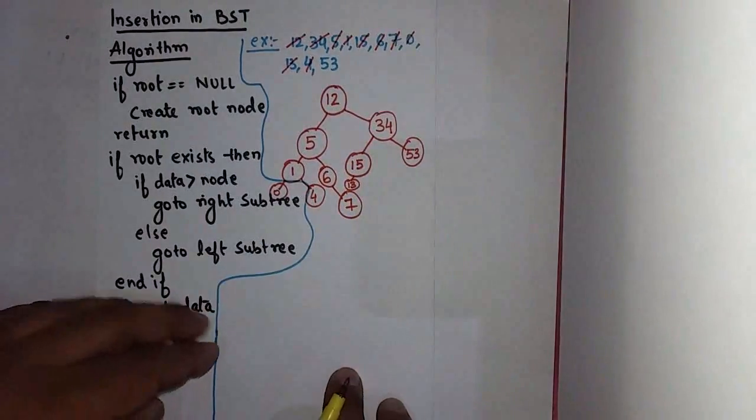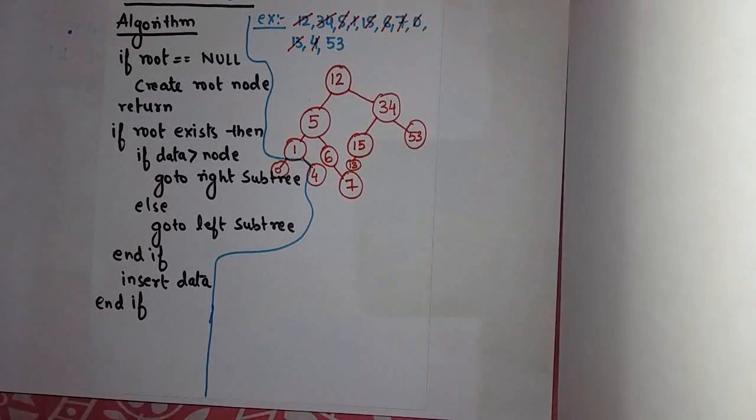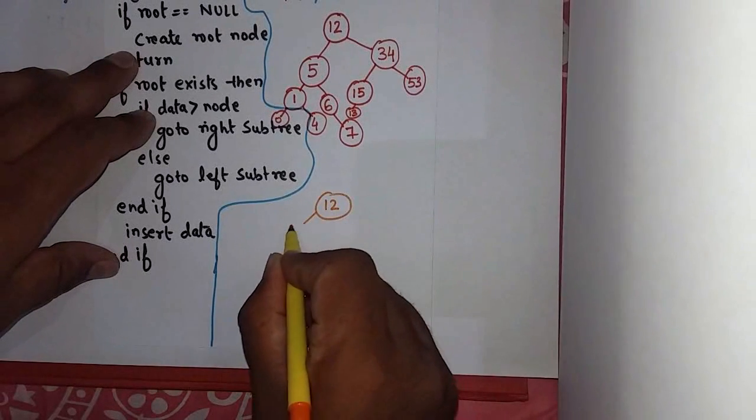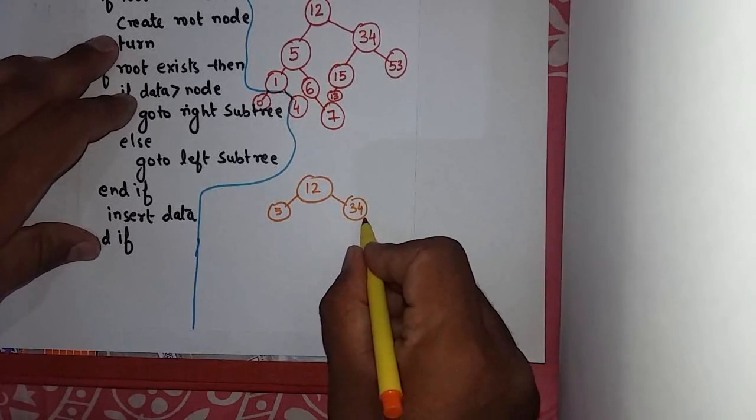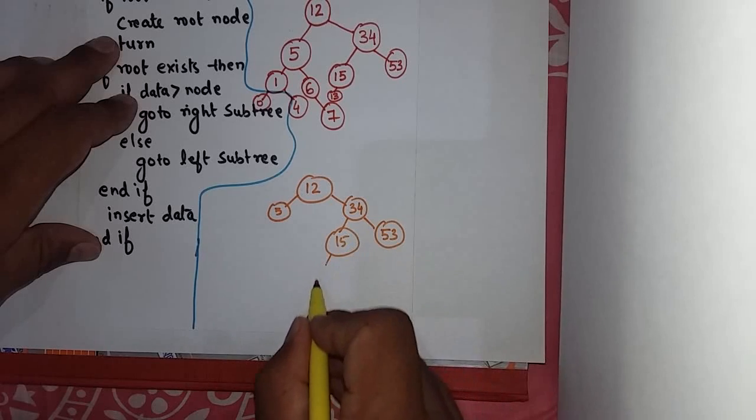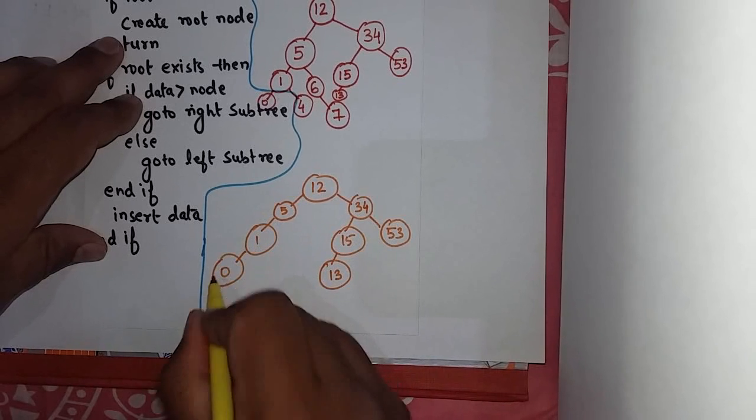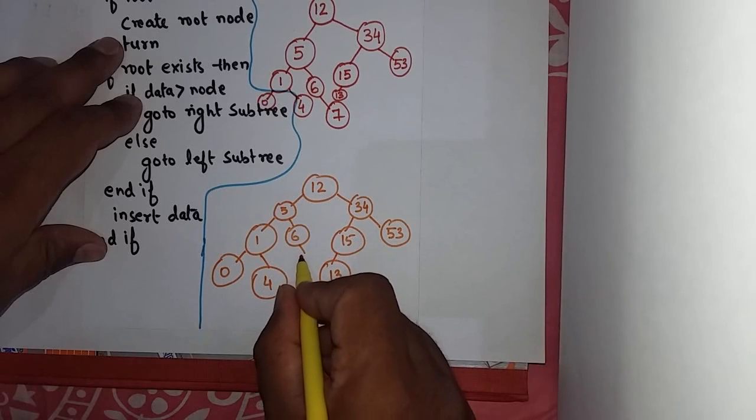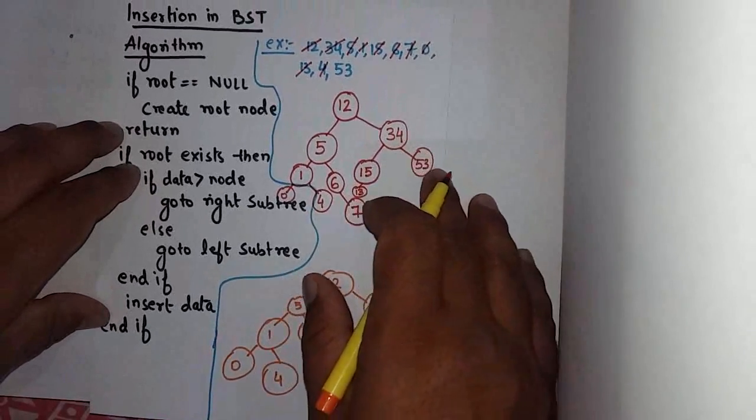Let's draw this tree once more so that you can see it more clearly. So in this way we perform insertion in binary search tree.